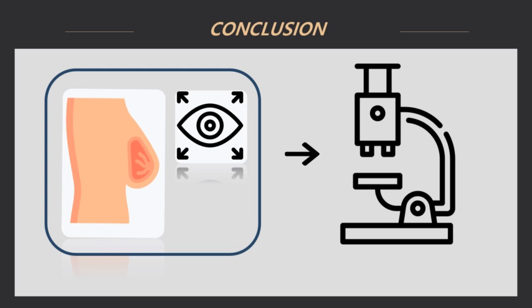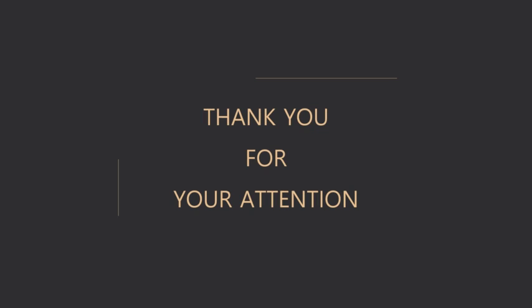Breast testing is a necessary method for early detection of breast disease and for the discovery of invisible microcalcifications in ultrasound. Partial compression imaging during mammography is a method of partially compressing a tumor or lesion visible in the image, separating the lesion from the normal mammary tissue to make the lesion clearer. It is hoped that the compression pedal designed in this study will contribute to improving the clinical environment and diagnostic value of mammography. Thank you for your attention.